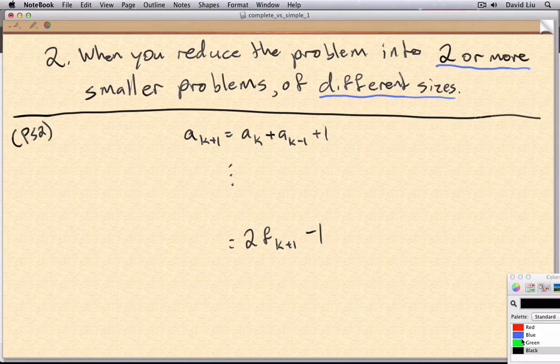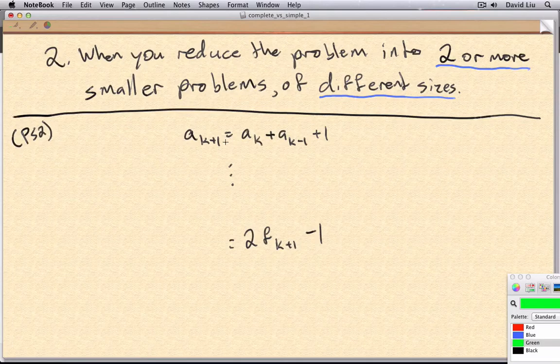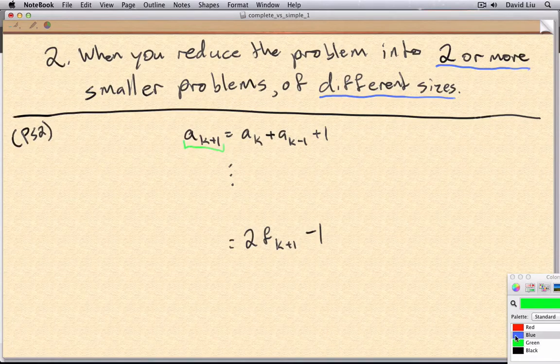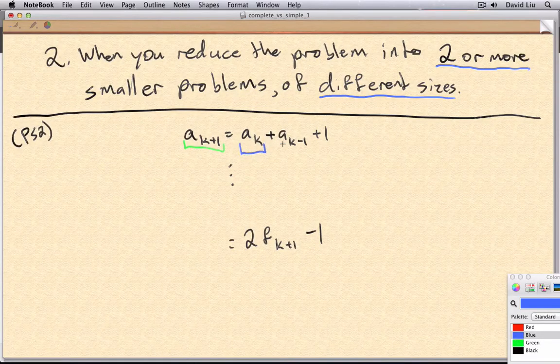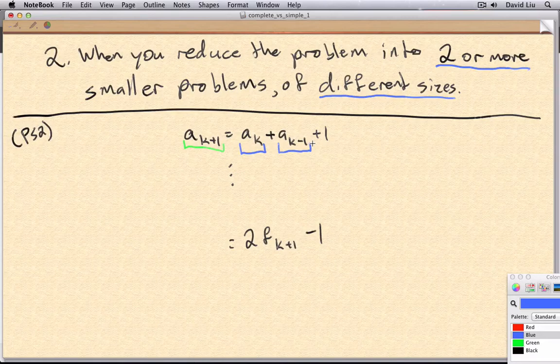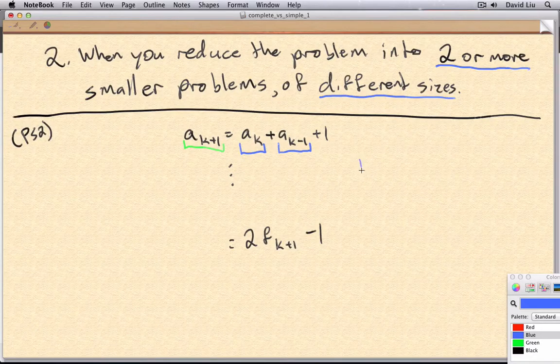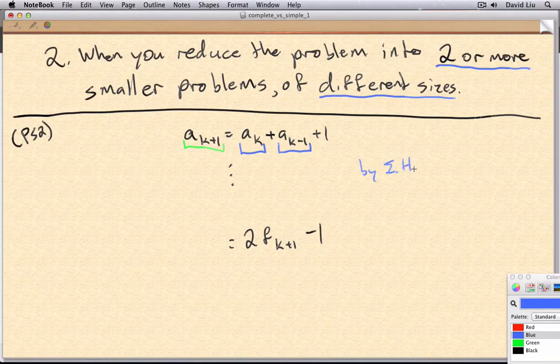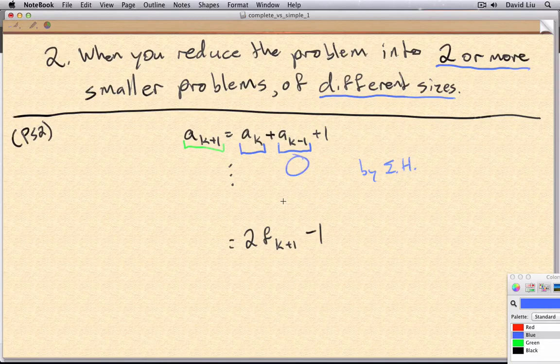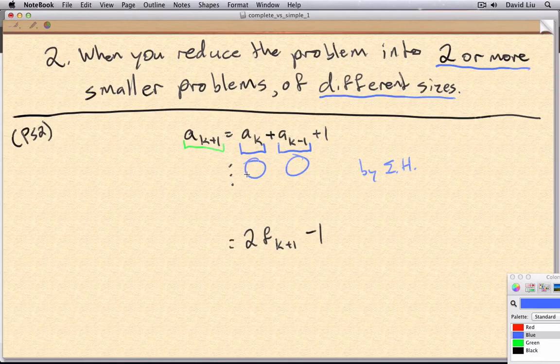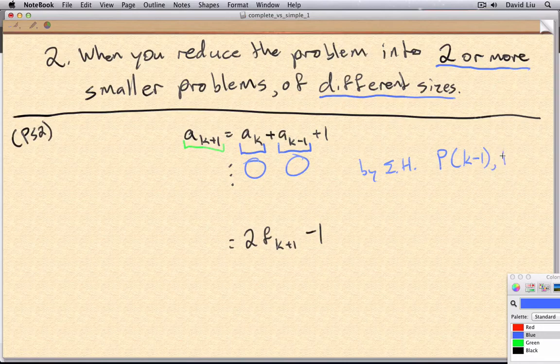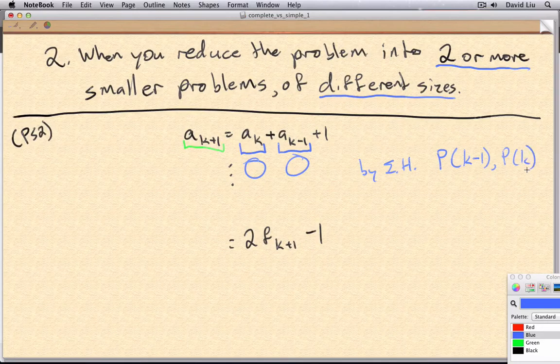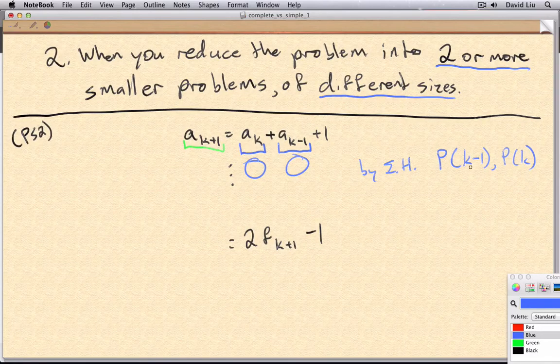Notice that this recursive definition really gives a(k+1) into two smaller terms of different sizes. And the reason we were able to use the induction hypothesis in this question and get expressions for both a(k-1) and a(k) is because we really had to assume both P(k-1) and P(k). And this only happened with complete induction.